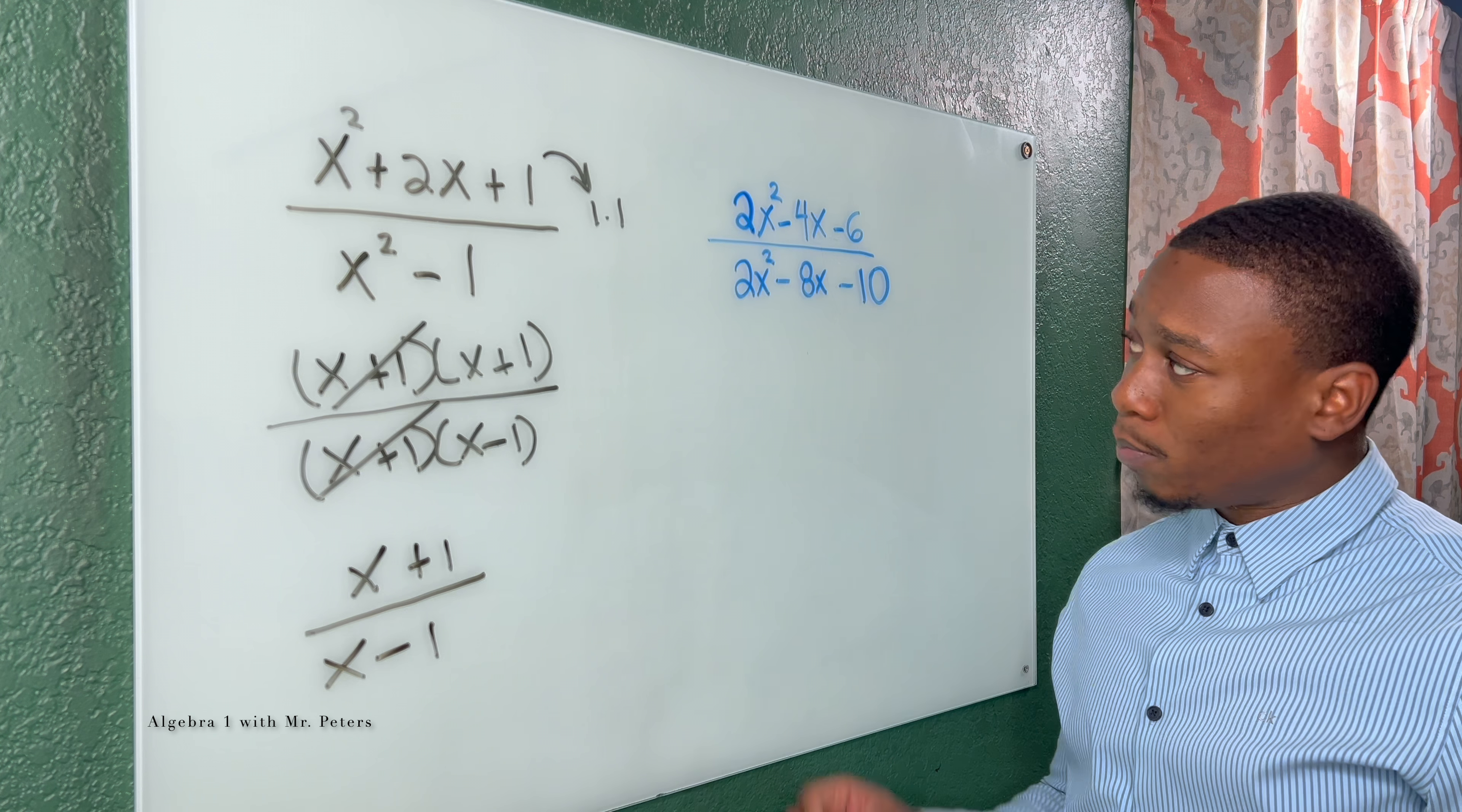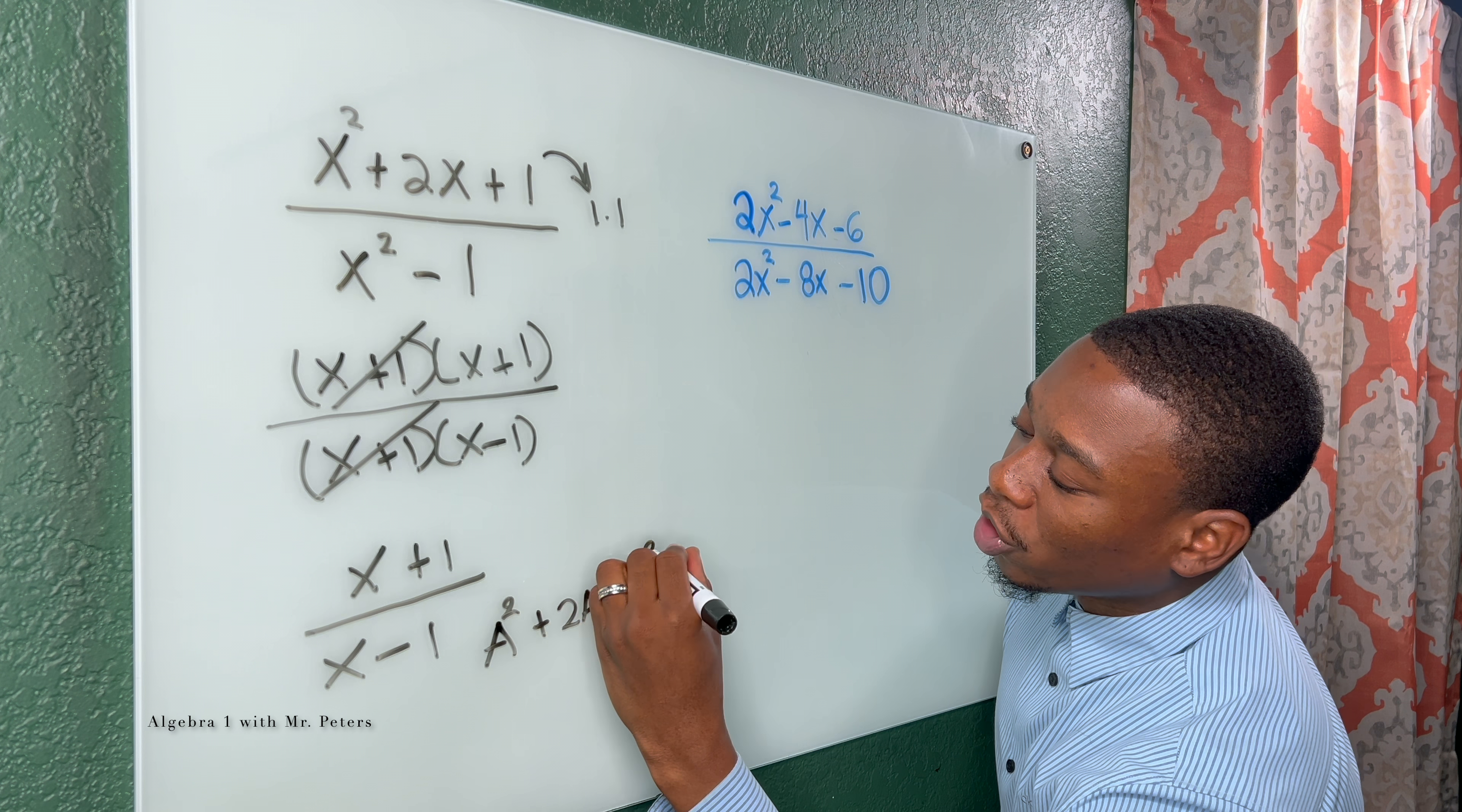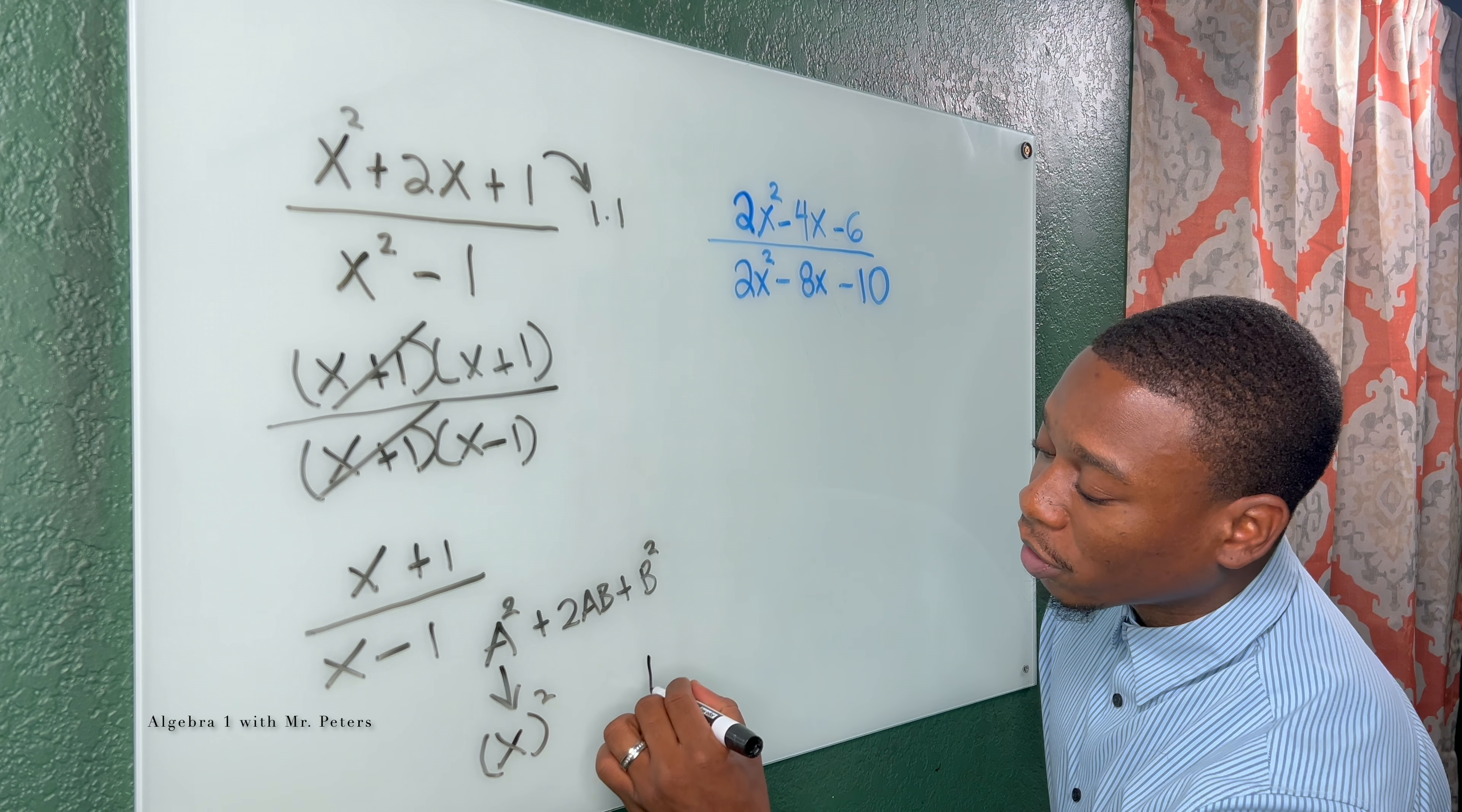Before we go to the last problem, the way we could identify this as a perfect square trinomial is just understanding that it follows this format. A squared plus 2 times AB plus B squared. So when we look at x squared, which is A, we know the square root is just x. And then when we look at 1, that is a perfect square. 1 times 1 gives us 1.